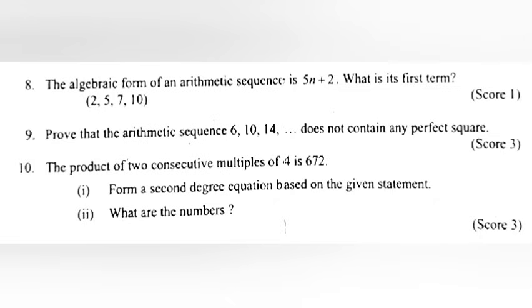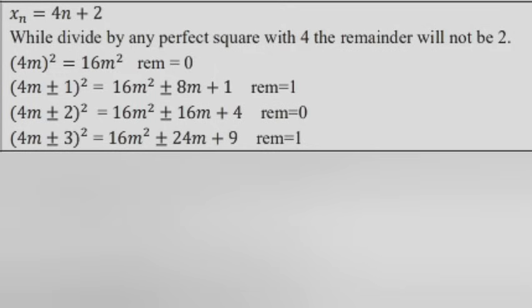Problem 9: Prove that the arithmetic sequence 6, 10, 14 does not contain any perfect square. Answer: xₙ = 4n + 2. When dividing any perfect square by 4, the remainder will not be 2.